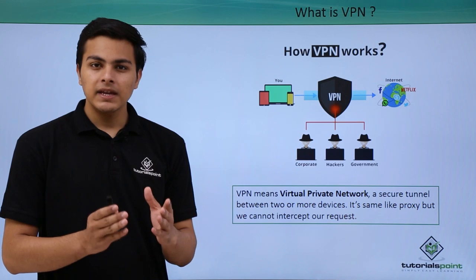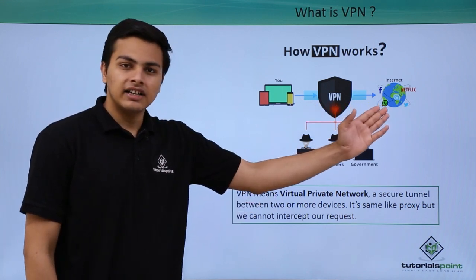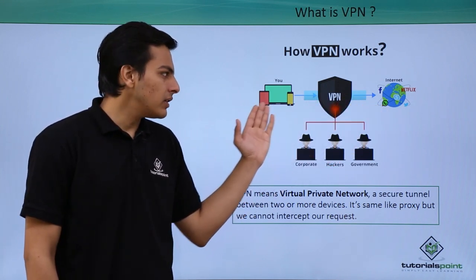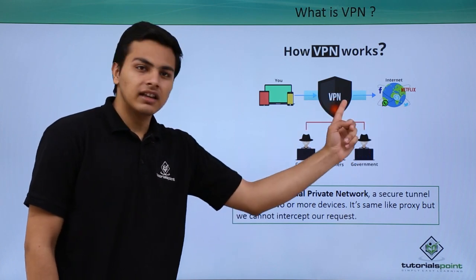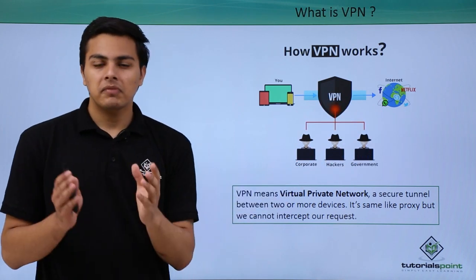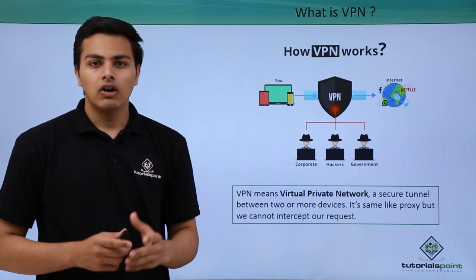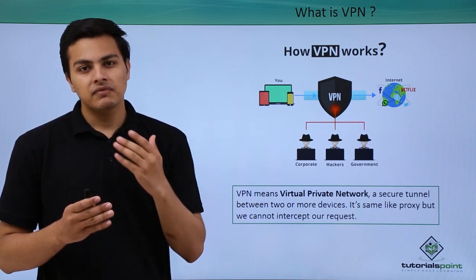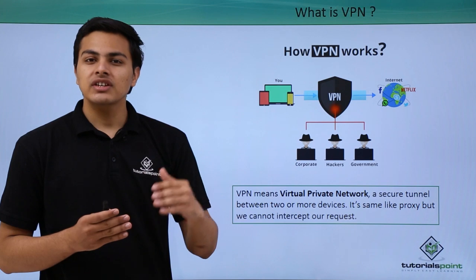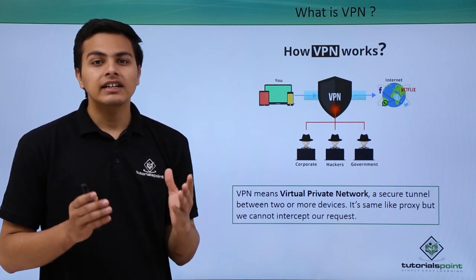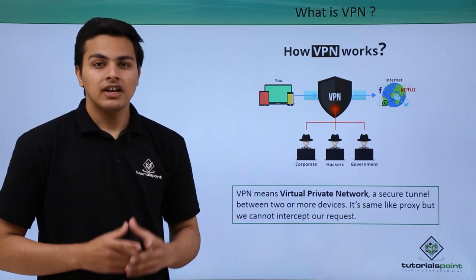Because a VPN creates a tunnel between us and the internet. Here is our computer, here is the internet, and the VPN creates a tunnel. By using this tunnel technique, our data or communication will get encrypted. Once our data or communication is encrypted, nobody can intercept our request or figure out what's going on.